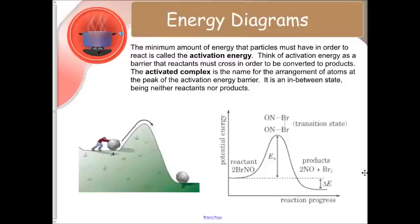The next thing we're going to cover are energy diagrams. The minimum amount of energy that particles must have in order to react is called activation energy. Think of activation energy as a barrier that reactants must cross in order to be converted to our products. A great example is the diagram. The person pushing the boulder up the part of the hill, he's got to get it to the top of the hill before it will roll the rest of the way down on its own. So he's going to do a little bit of the work to get it started and then the rest will be on its own.